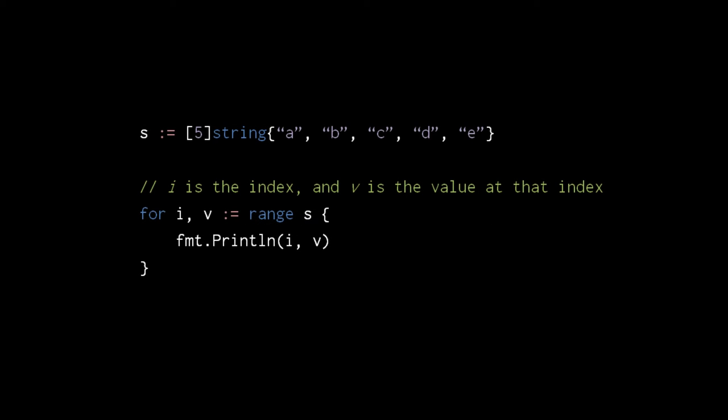Go has a near equivalent of JavaScript's for-in loops called for range. Given an array or slice, we can conveniently loop over the elements with for range. In each iteration, the variable i receives an index, and v receives the actual value at that index. So this loop will print first 0a, then 1b, then 2c, then 3d, and lastly 4e.